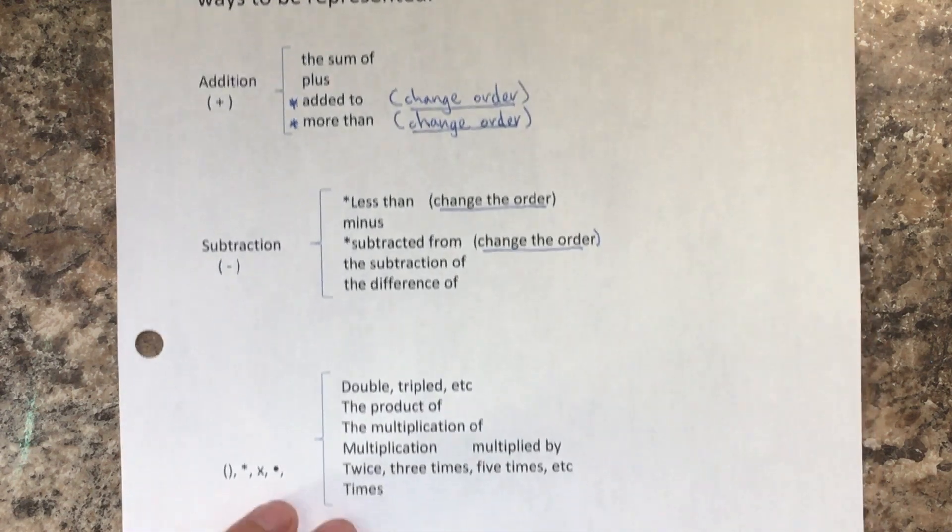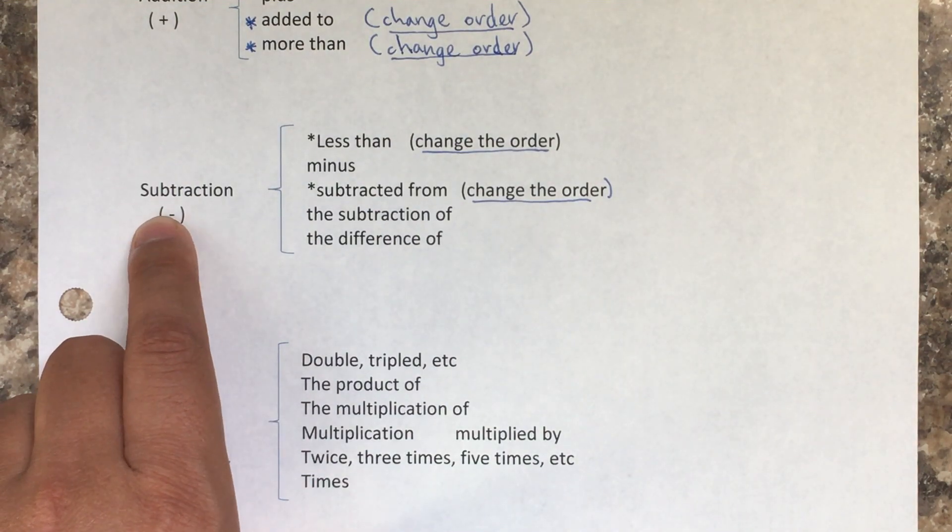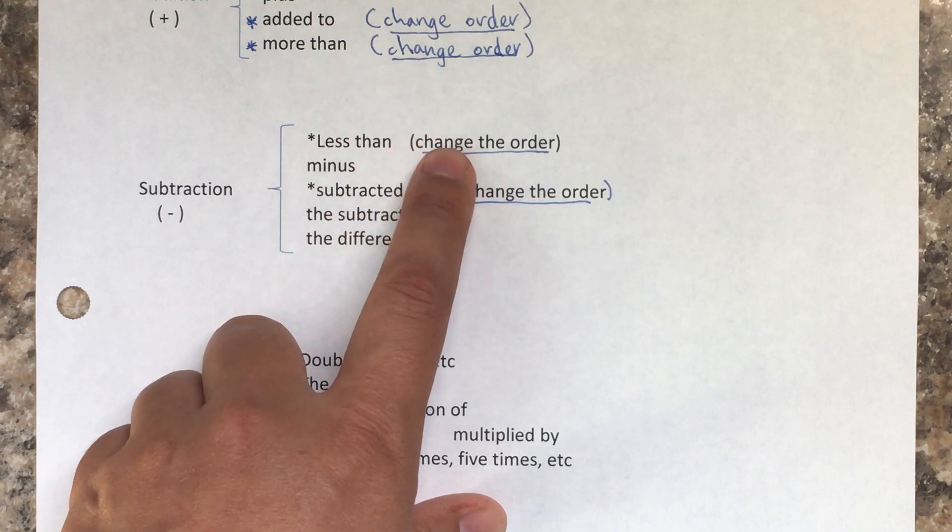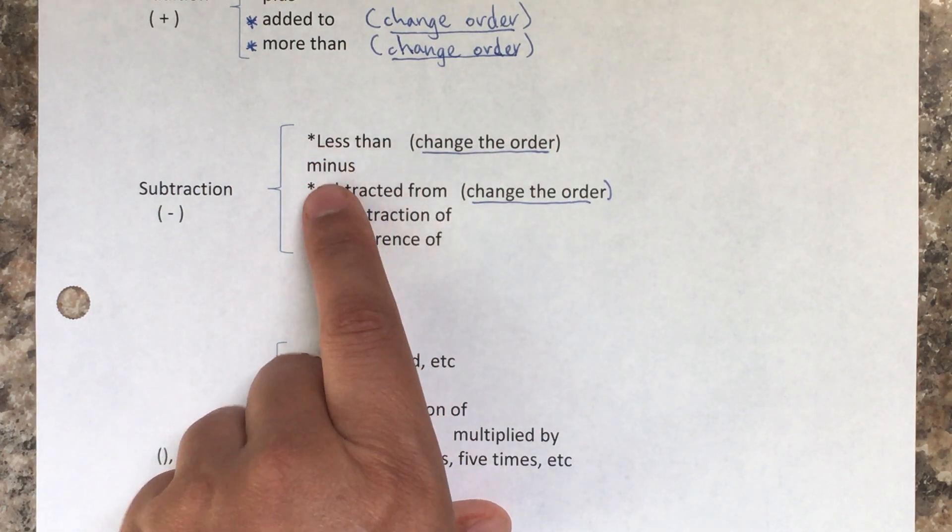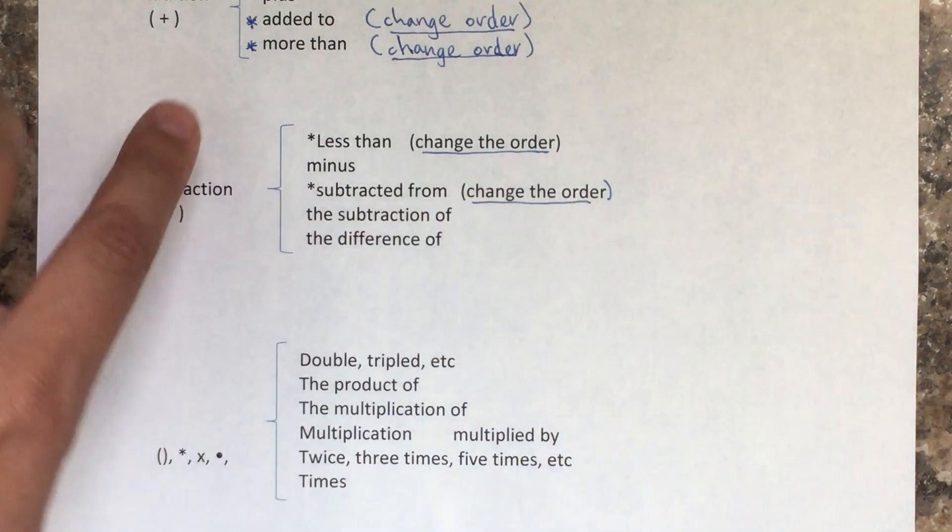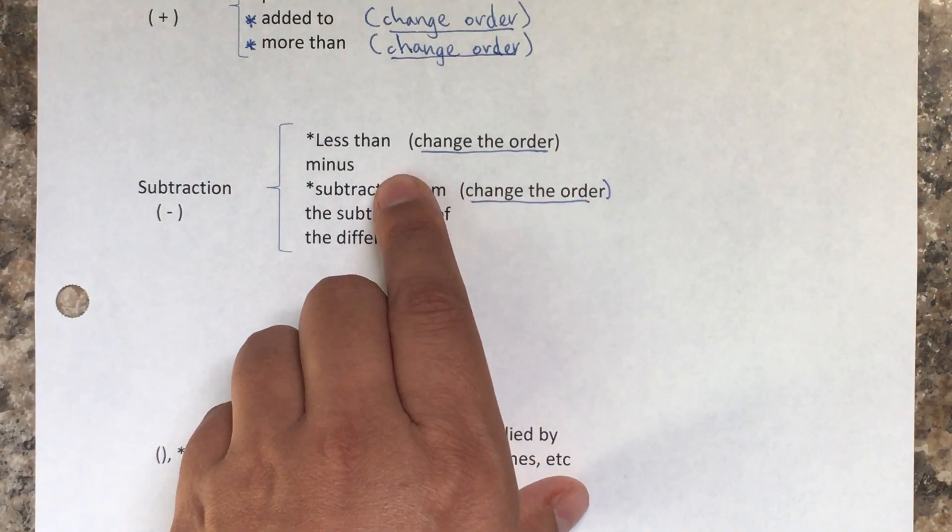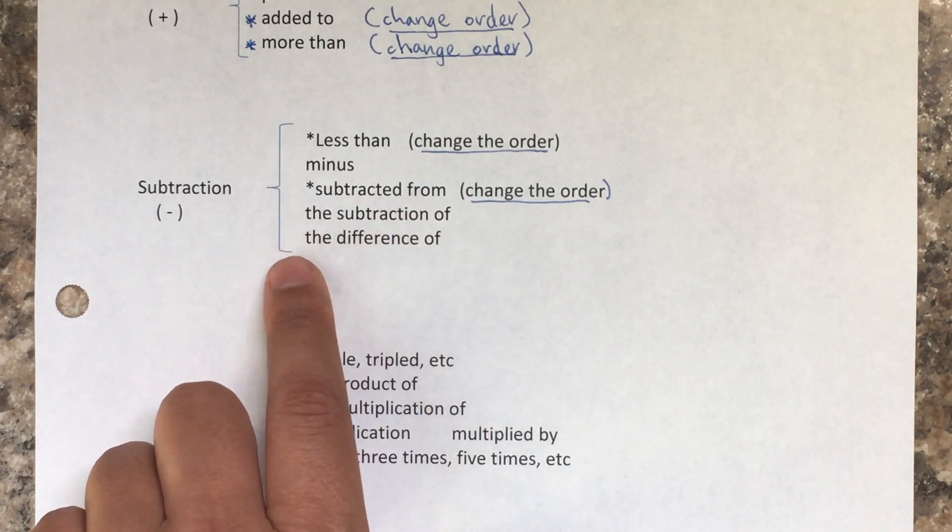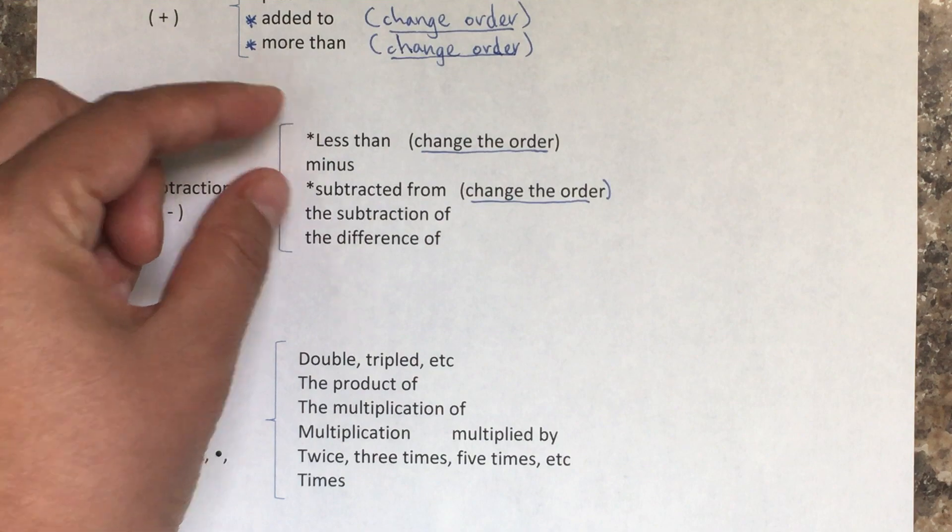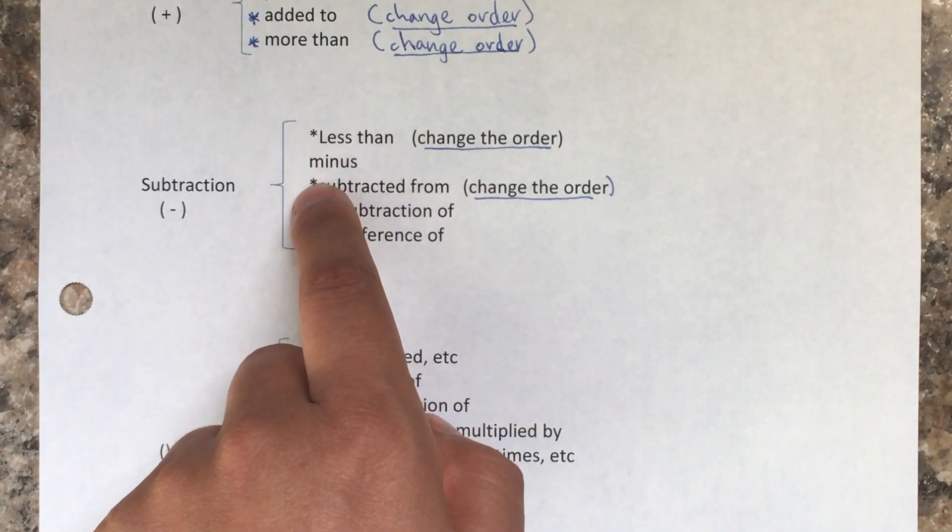The next one is subtraction. For subtraction, the symbol is this dash, and you have less than, which is similar to more than—you're subtracting, now you also change the order. You have minus, subtracted from, you also change the order. Remember, you can take note of this and put an asterisk—it's because you have to change the order for those. The subtraction of, the difference of—all of these are minus. The only ones that you change the order are the ones with asterisk.